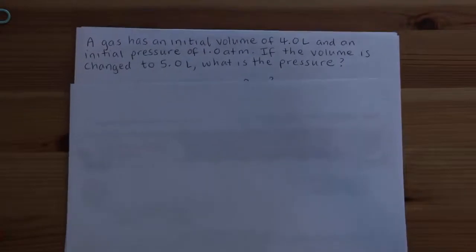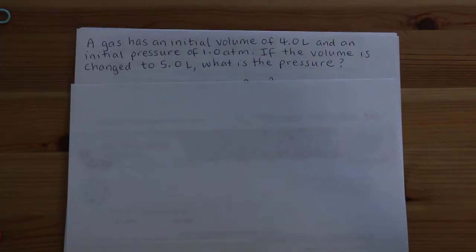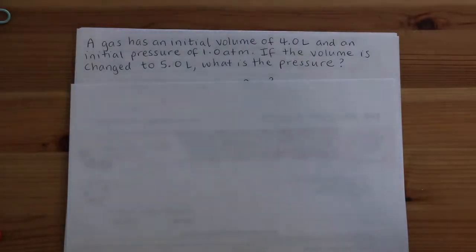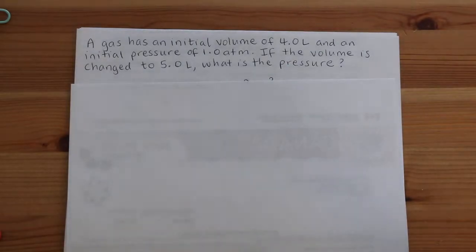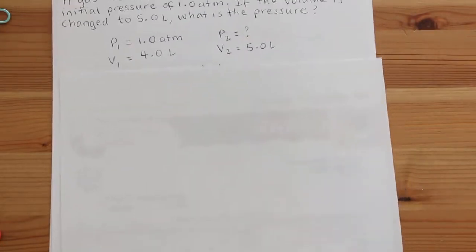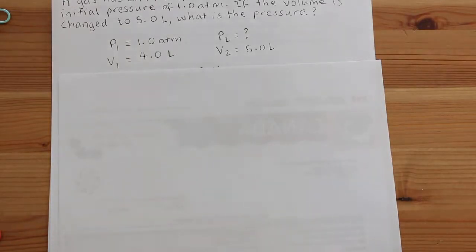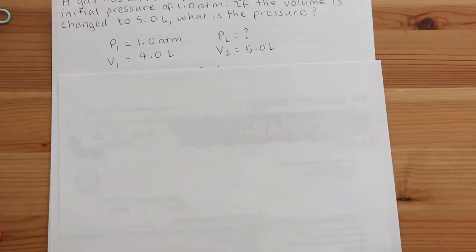Let's quickly take a look at a calculation. A gas has an initial volume of 4.0 liters and an initial pressure of 1.0 atmosphere. If the volume is changed to 5.0 liters, what is the pressure? The first thing you need to do is identify your four variables: P1, V1, P2, and V2. So P1 is 1.0 atmosphere, V1 is 4.0 liters, P2 is what we want to find, and V2 is 5.0 liters.